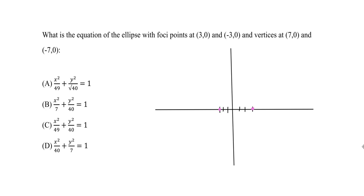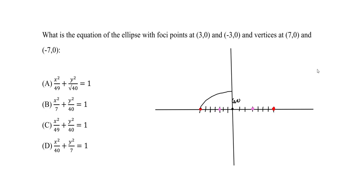So counting from 3 out to 4, 5, 6, 7 — this is one vertex point. For the negative side, we go to the left: 3, 4, 5, 6, negative 7 — that's our other vertex. So our center here is going to be (0, 0). We can now estimate how the ellipse would look — we have an ellipse that's symmetric about the x-axis.